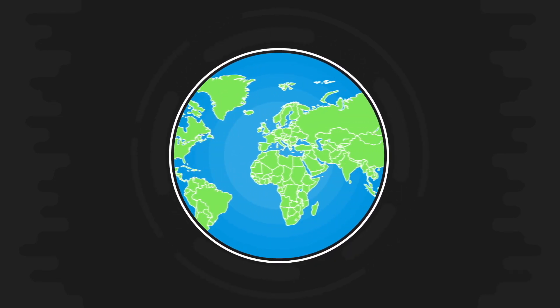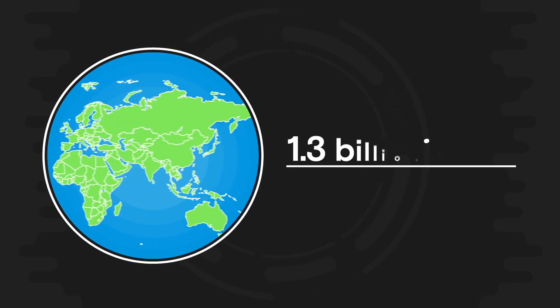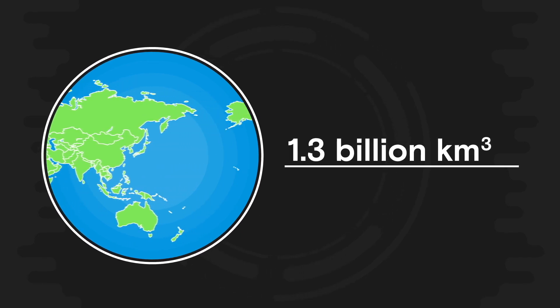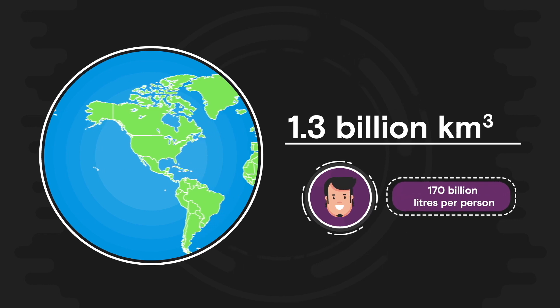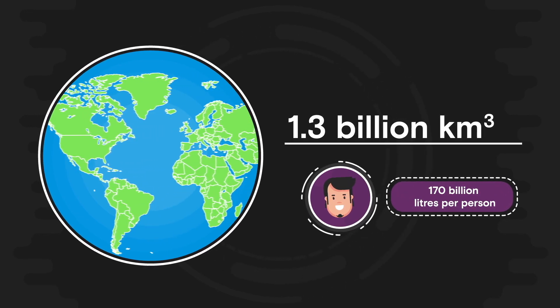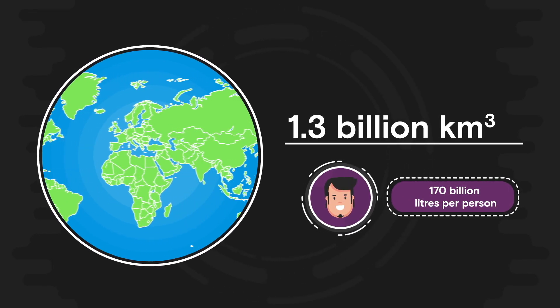Water. It covers 71% of the earth and we have 1.3 billion cubic kilometers of the stuff. That's equivalent to 170 billion liters per person.